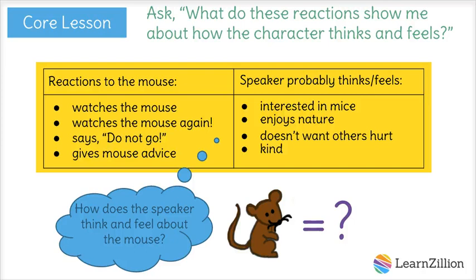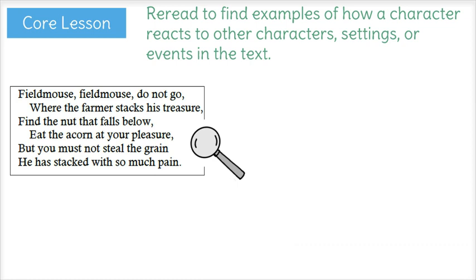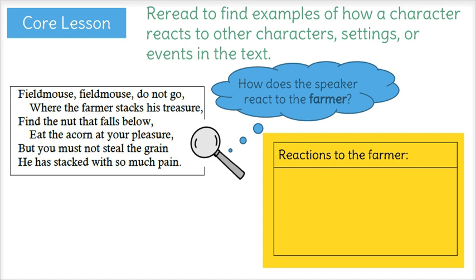Now that I know the speaker's point of view toward the mouse, remember my question also asked me about the farmer. So I'll follow my steps again and go back into the text, this time looking for evidence about how the speaker reacts to the farmer. I think that happens in stanza three. The speaker notes that the farmer stacks his treasure, and then later in lines 17 and 18, he explains that the treasure is actually the grain that the farmer harvested.